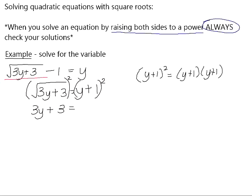So you need to do FOIL. Don't fall into the trap of just squaring the y and just squaring the 1. Square the first term, which gives you y squared. Find the product of the two inside terms and double it — y times 1 is 1y, doubled gives you 2y. Square the last term gives you plus 1. You can see the outers and inners each give 1y, and 1y plus 1y gives positive 2y. This is now a quadratic equation because we have a variable squared.